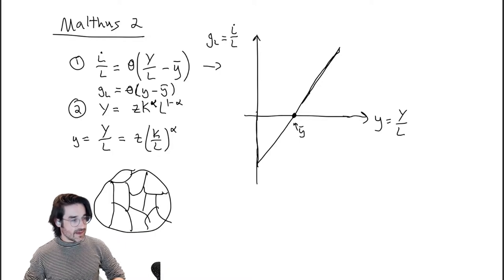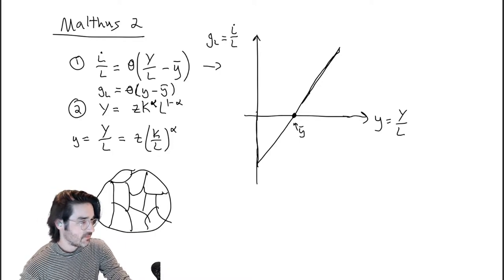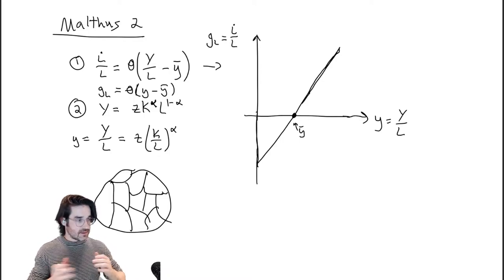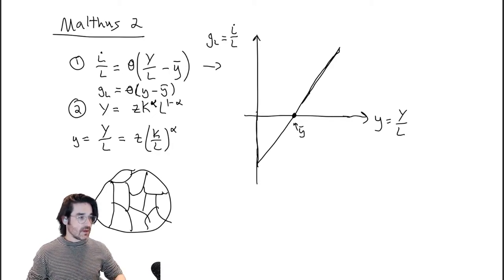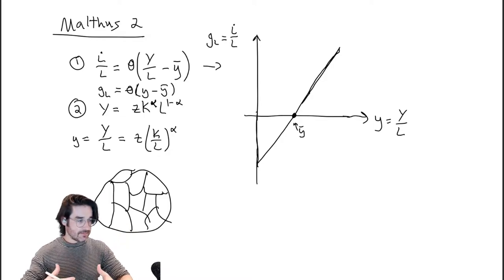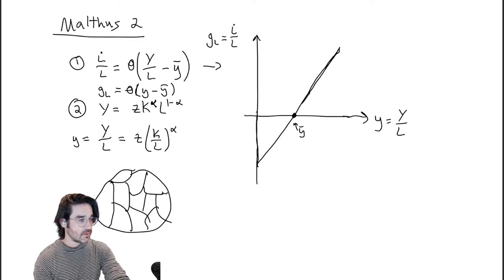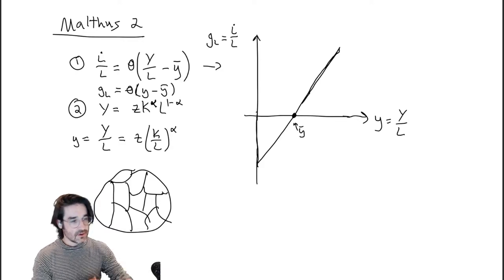So this is our space — things happen in Y space, that's kind of where we're moving around. Really we're moving around in L — the population going up and down — but once you know the population, given that land is fixed and technology is fixed and alpha is just a number, that immediately gives you Y. So if you know L, you know Y.